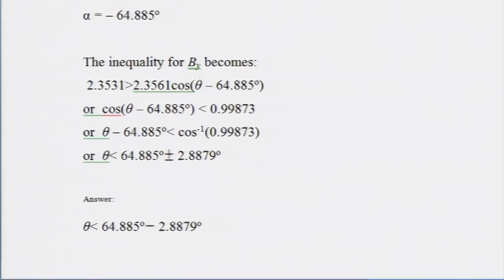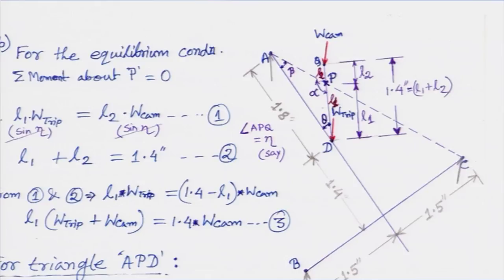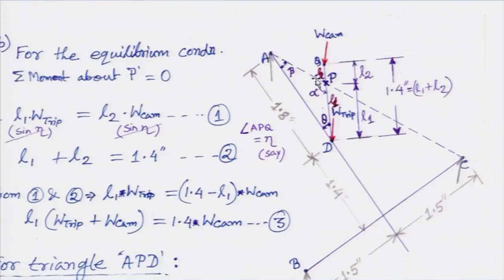A simplified way to understand this problem: consider the line AC. You have the tripod weight at D and the camera weight at Q. Where is the resultant of these two weights? Whenever that resultant passes through line AC — as soon as it goes on the other side of line AC — it is going to tip over.